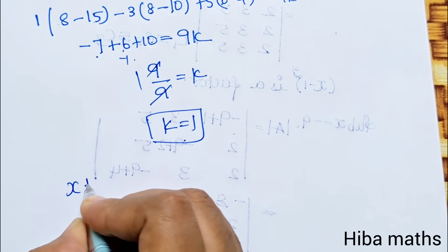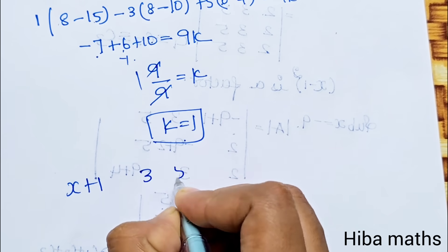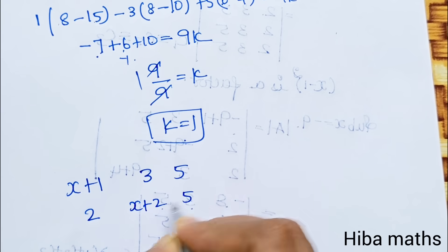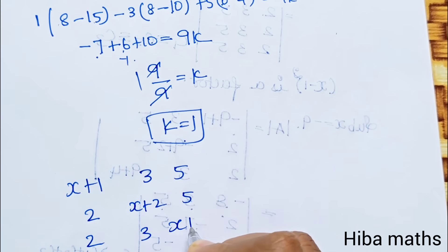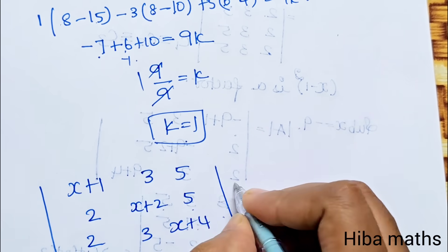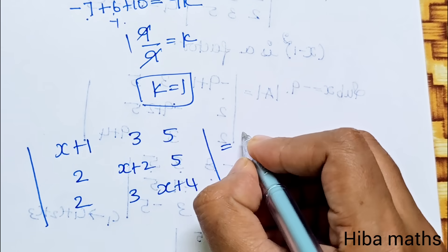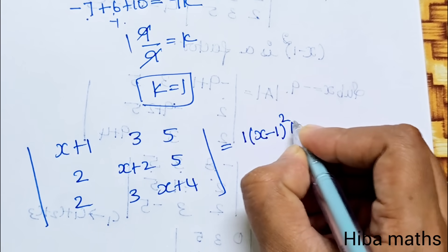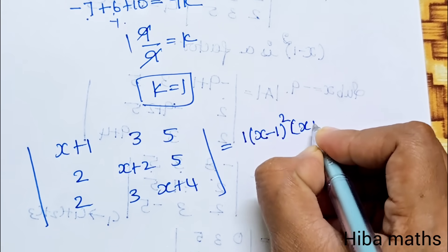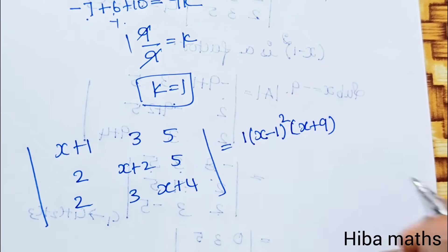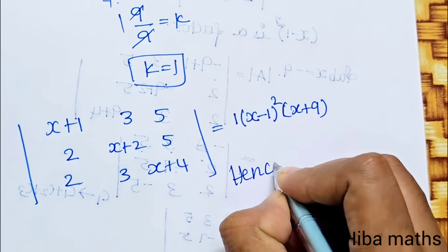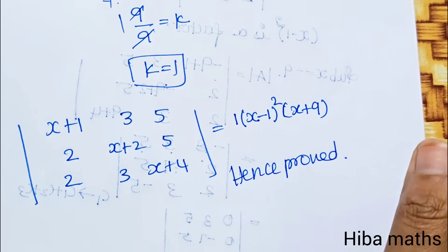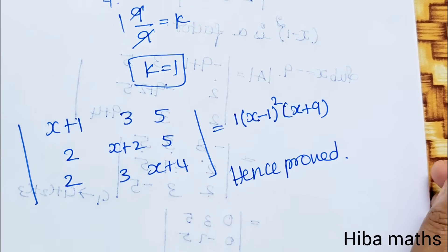Substituting k=1 back, the determinant of rows (x+1, 3, 5), (2, x+2, 5), (2, 3, x+4) equals 1 into (x-1)² into (x+9), which is (x-1)²(x+9). Hence proved.